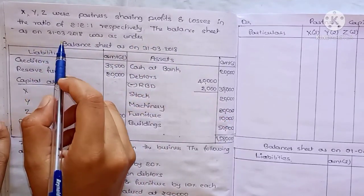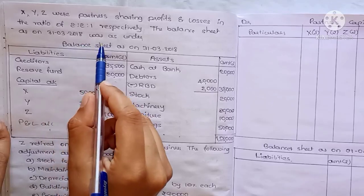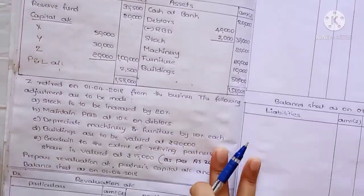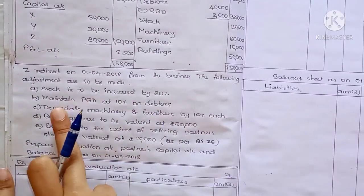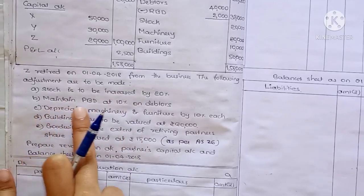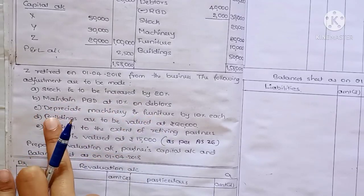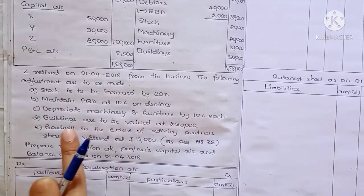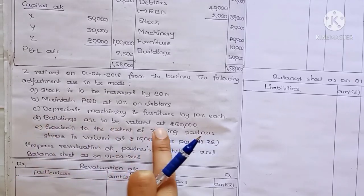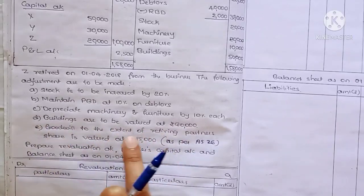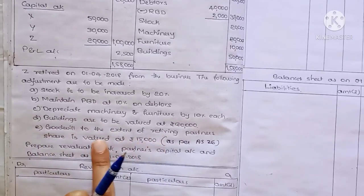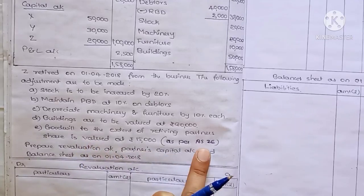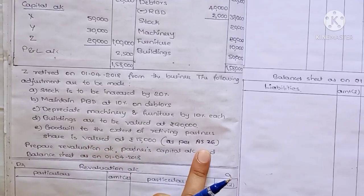The balance sheet is as on 31st, 2018. The adjustments are: stock increase, maintain PBD, depreciate machinery and furniture by 10%, the building is to be valued, and the goodwill adjustment is as per AS26.